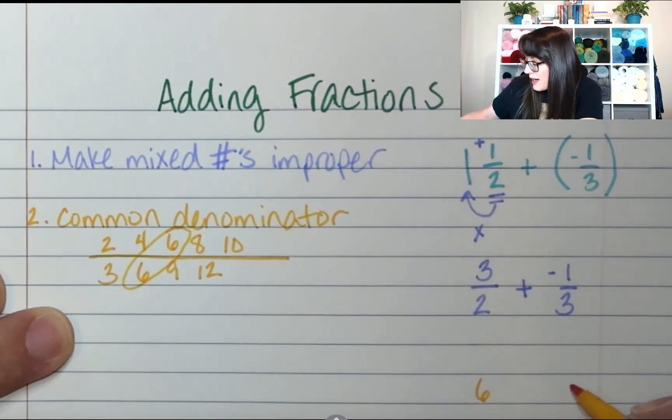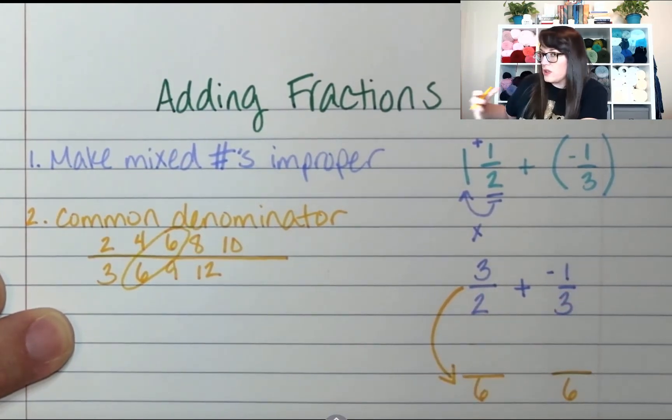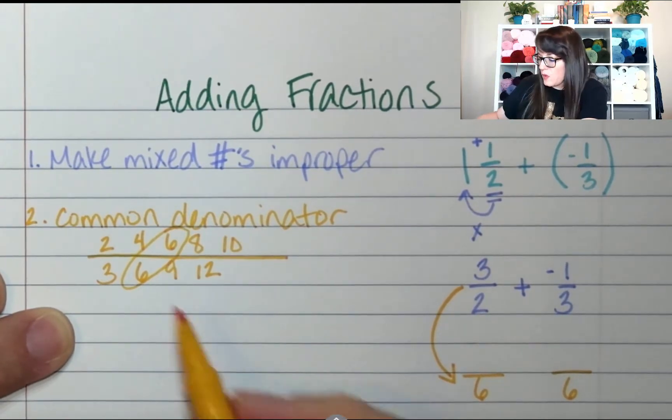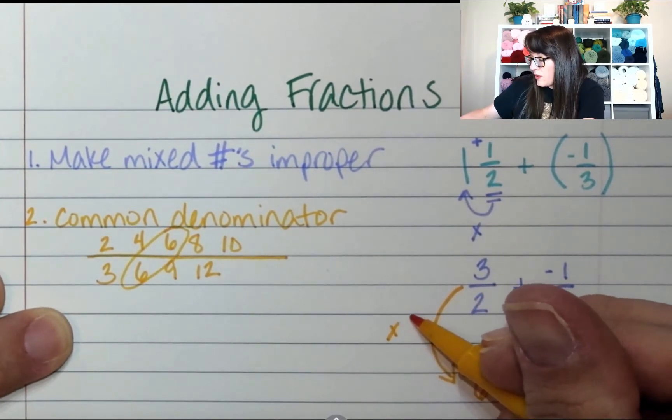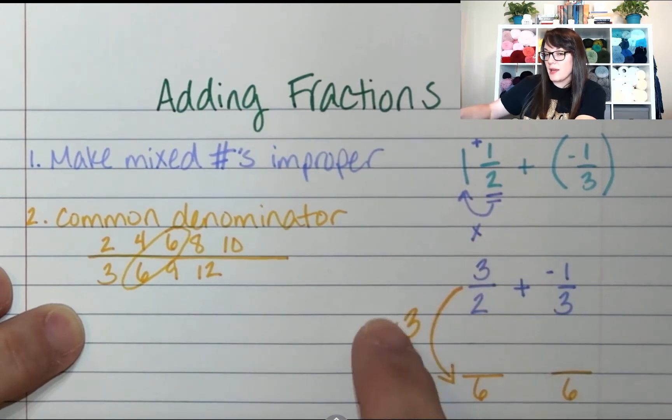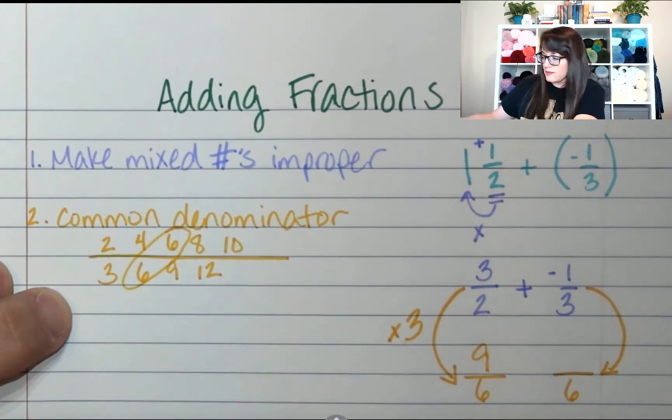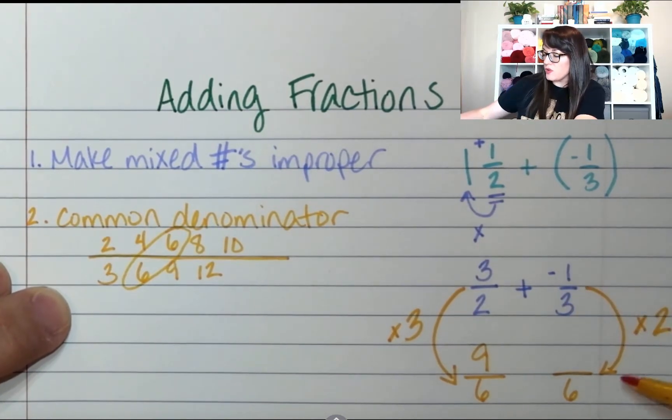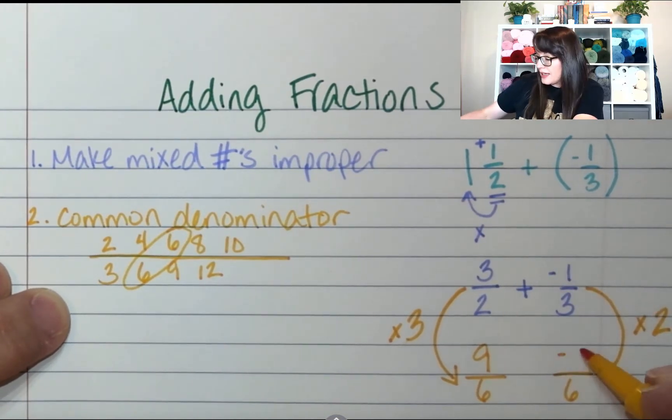So, if six is my common denominator, what did I have to do to the two to get to six? We multiplied it by three. Two times three was six. So, over here I'm going to go through a times three portal. If two times three is six, then three times three is nine. Over here I'm going to do the same thing. What did I have to do to the three to get to six? I timesed by two. So, over here I'm going through a times two portal. Three times two was six. So, negative one times two is negative two. And I'm still adding.